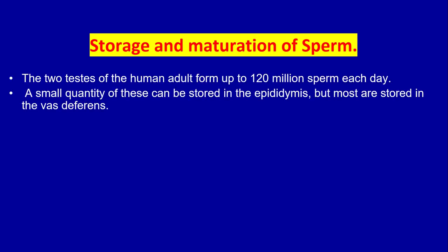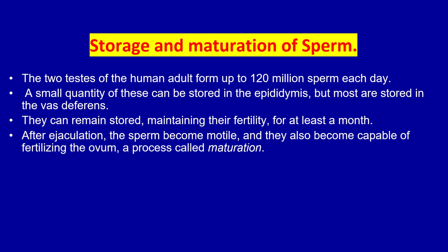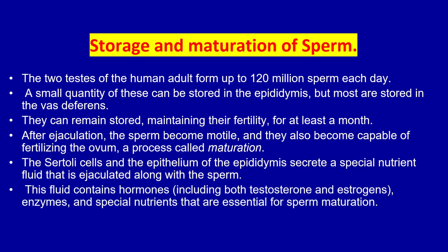The two testes of the human adult form up to 120 million sperm each day. A small quantity can be stored in the epididymis, but most are stored in the vas deferens, where they can remain maintaining their fertility for at least a month. After ejaculation, the sperm become motile and capable of fertilizing the ovum — a process called maturation. The Sertoli cells and epithelium of the epididymis secrete a special nutrient fluid ejaculated along with the sperm, containing hormones including testosterone and estrogen, enzymes, and nutrients essential for sperm maturation.